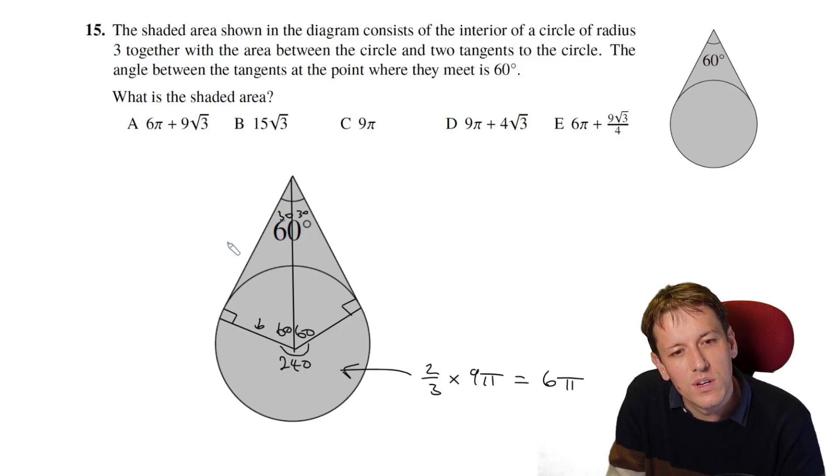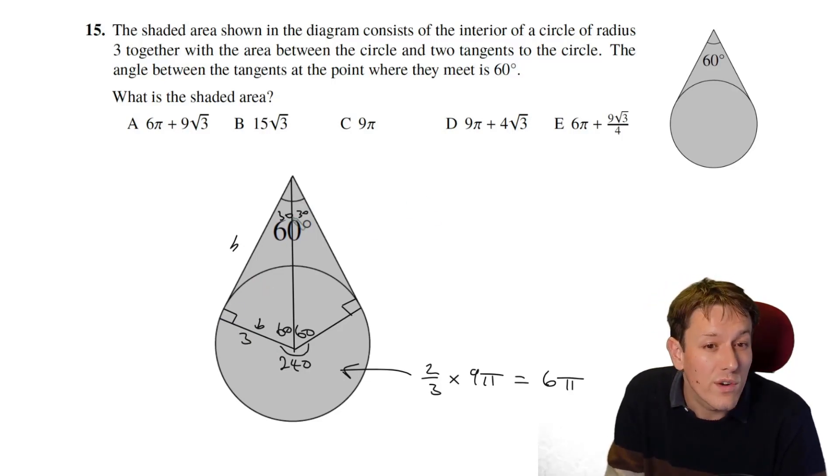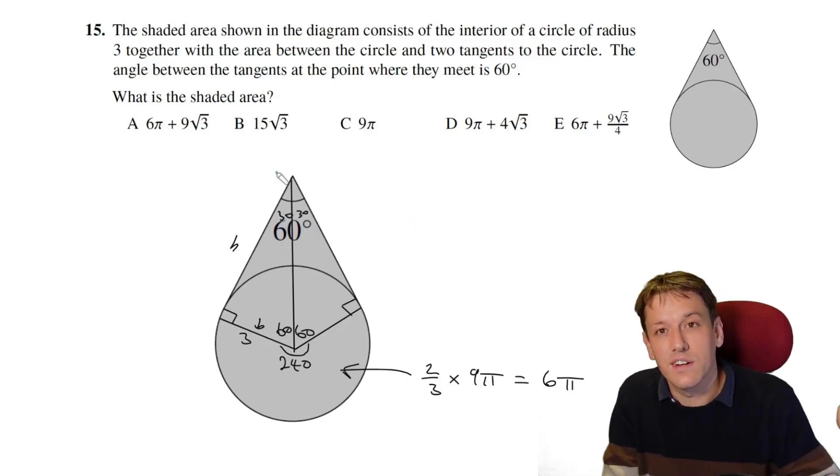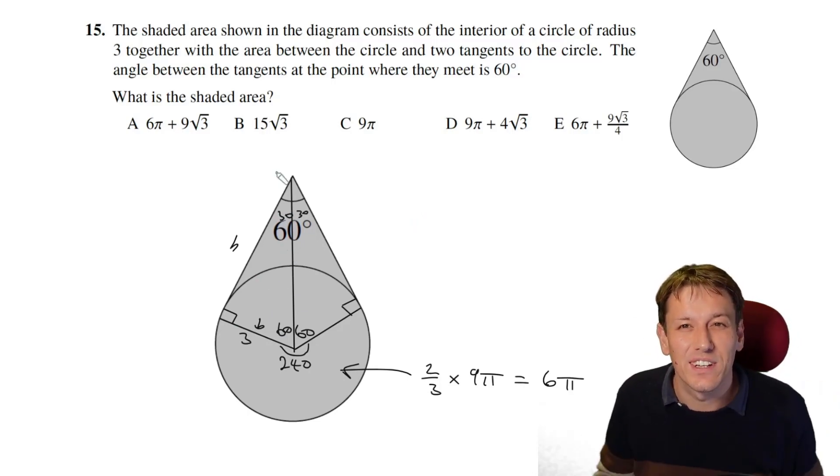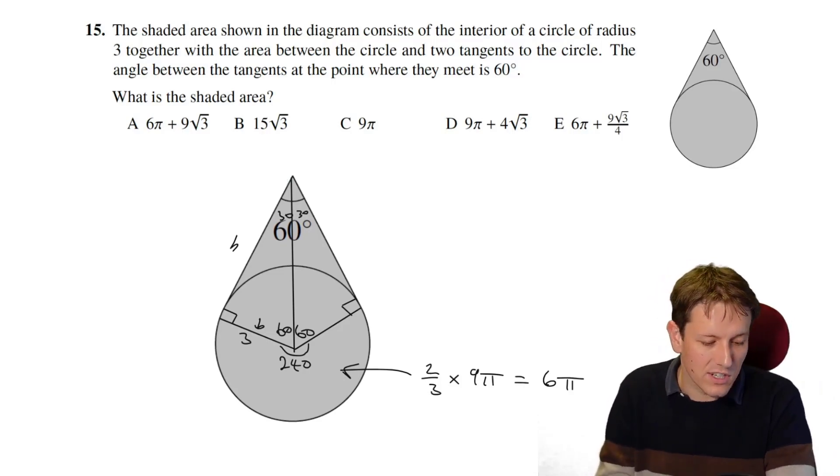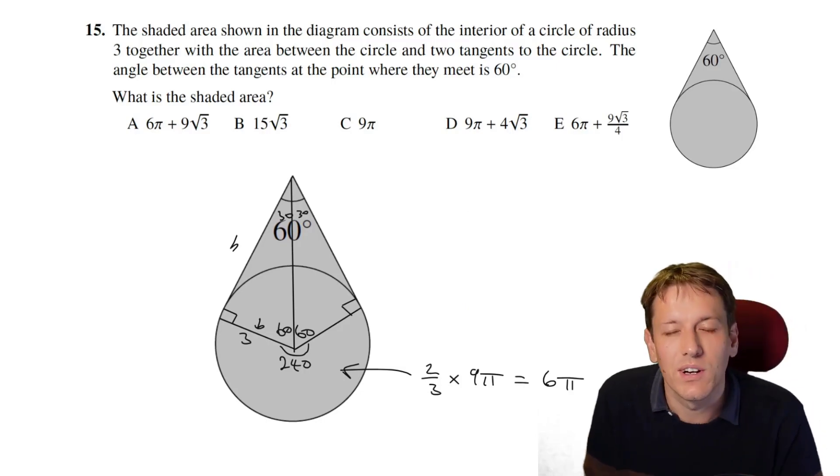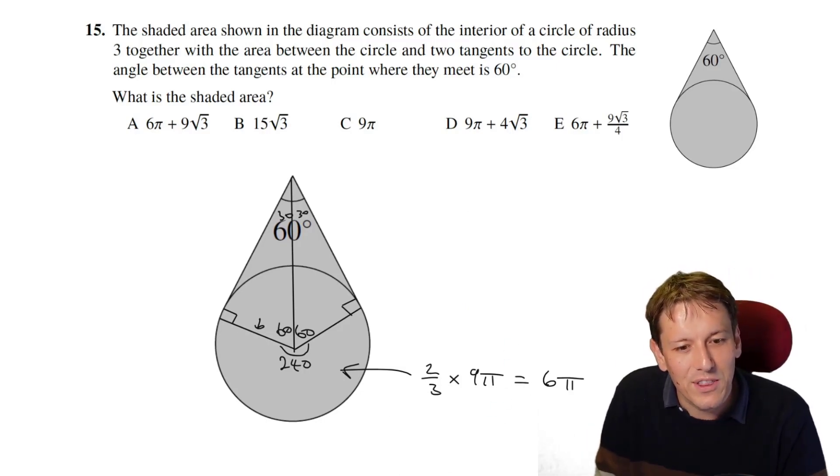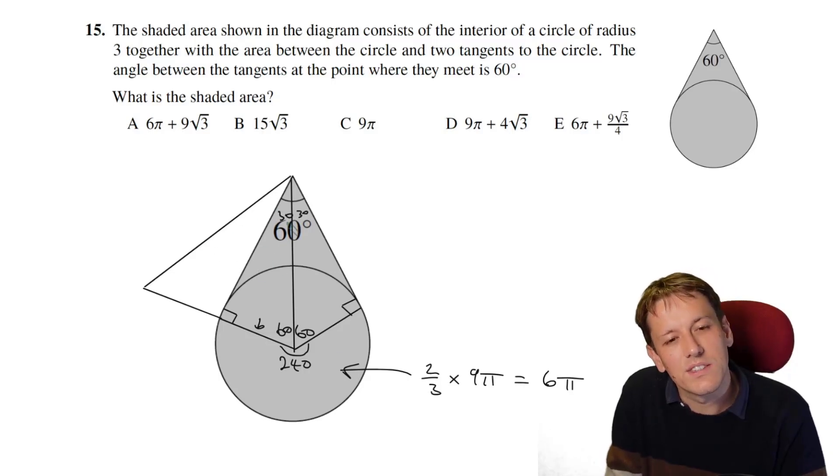So they're right-angled triangles, so I can just do half base times height for them. The base is the radius of the circle, which is three. You could work out the height here using Sokha Toa if you wanted to, but I don't like to use those if I don't have to. So another way of doing this would be to just paste these two triangles together here and say, okay, what I want is the area of this triangle. That would be this whole equilateral triangle here, and it is an equilateral triangle, right, because it's 60 at the bottom here, it would be 60, it would be 60 at the top here, and so it would be 60 here as well.